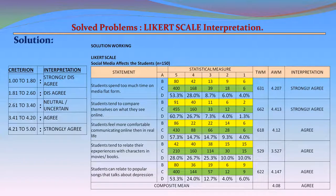Now let us interpret the AWM values using the Likert scale criteria: 1.00–1.80 = Strongly Disagree, 1.81–2.60 = Disagree, 2.61–3.40 = Neutral/Uncertain, 3.41–4.20 = Agree, 4.21–5.00 = Strongly Agree. Statement 1 (4.207): Agree. Statement 2 (4.413): Strongly Agree. Statement 3 (4.12): Agree. Statement 4 (3.527): Agree. Statement 5 (4.147): Agree.